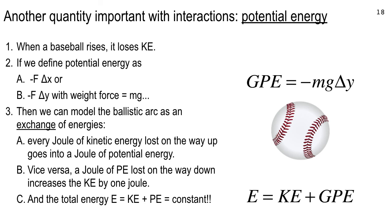Conservation of mechanical energy is somewhat idealized — for real objects, friction and air resistance dissipate energy. Even satellites in low Earth orbit experience a tiny amount of atmospheric drag two to three hundred miles up. Over many years this degrades kinetic energy, the orbit decays into thicker atmosphere, and eventually the spacecraft splashes down in the ocean or crashes on land.